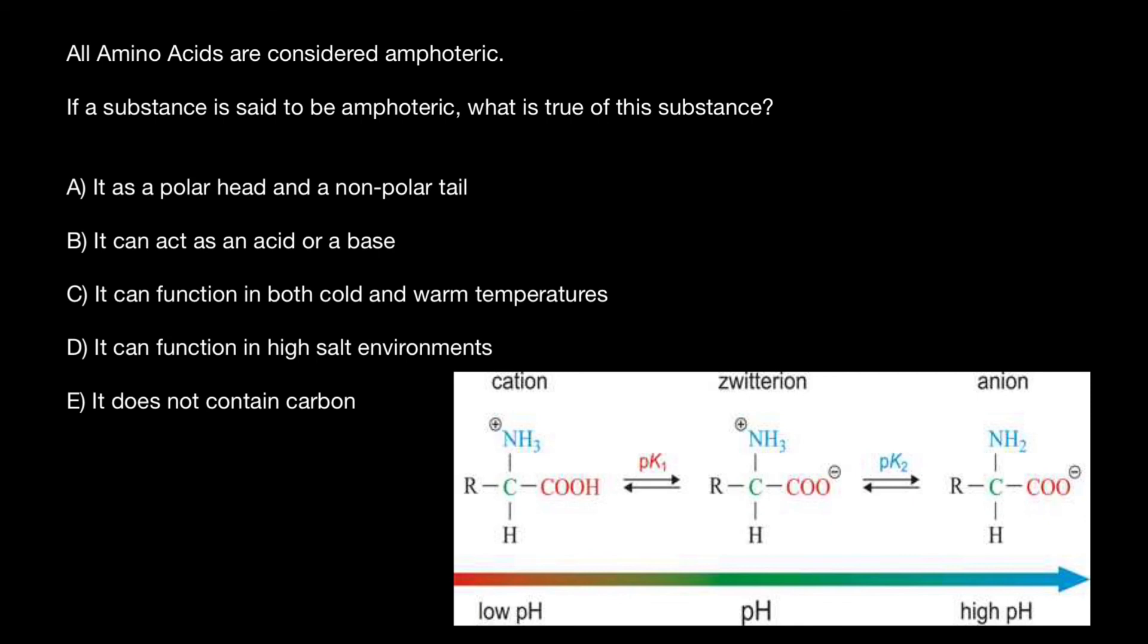And now we can choose an answer. We call amphoteric such a substance which can act as an acid and base. And this is answer B.